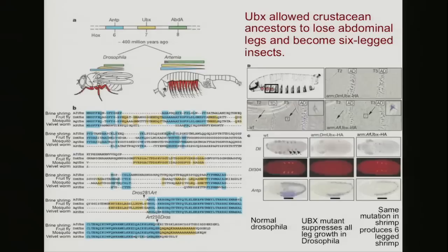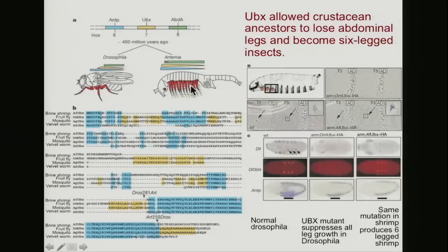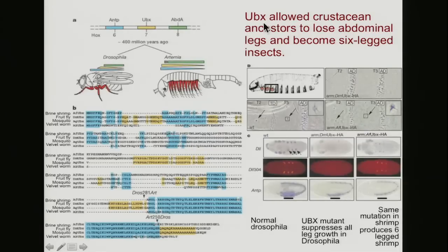If we have this same mutation that leads to legless flies, but we have that same mutation in the crustacean, then instead of having a crustacean that produces a dozen pairs of legs, it only produces three pairs — it too will produce six-legged offspring. So that's a single mutation that has this huge effect. It's one of the homeobox genes and it's called UBX.